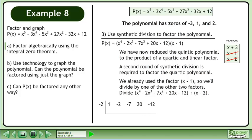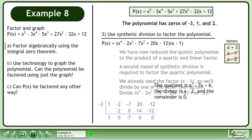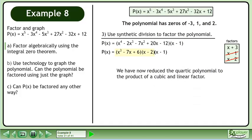Set up and complete the synthetic division. The quotient is x³ - 7x + 6, the divisor is (x - 2), and the remainder is 0. Using p(x) = q(x) · d(x) + r, we can write the polynomial in factored form: p(x) = (x³ - 7x + 6)(x - 2). We have now reduced the quartic polynomial to the product of a cubic and linear factor.